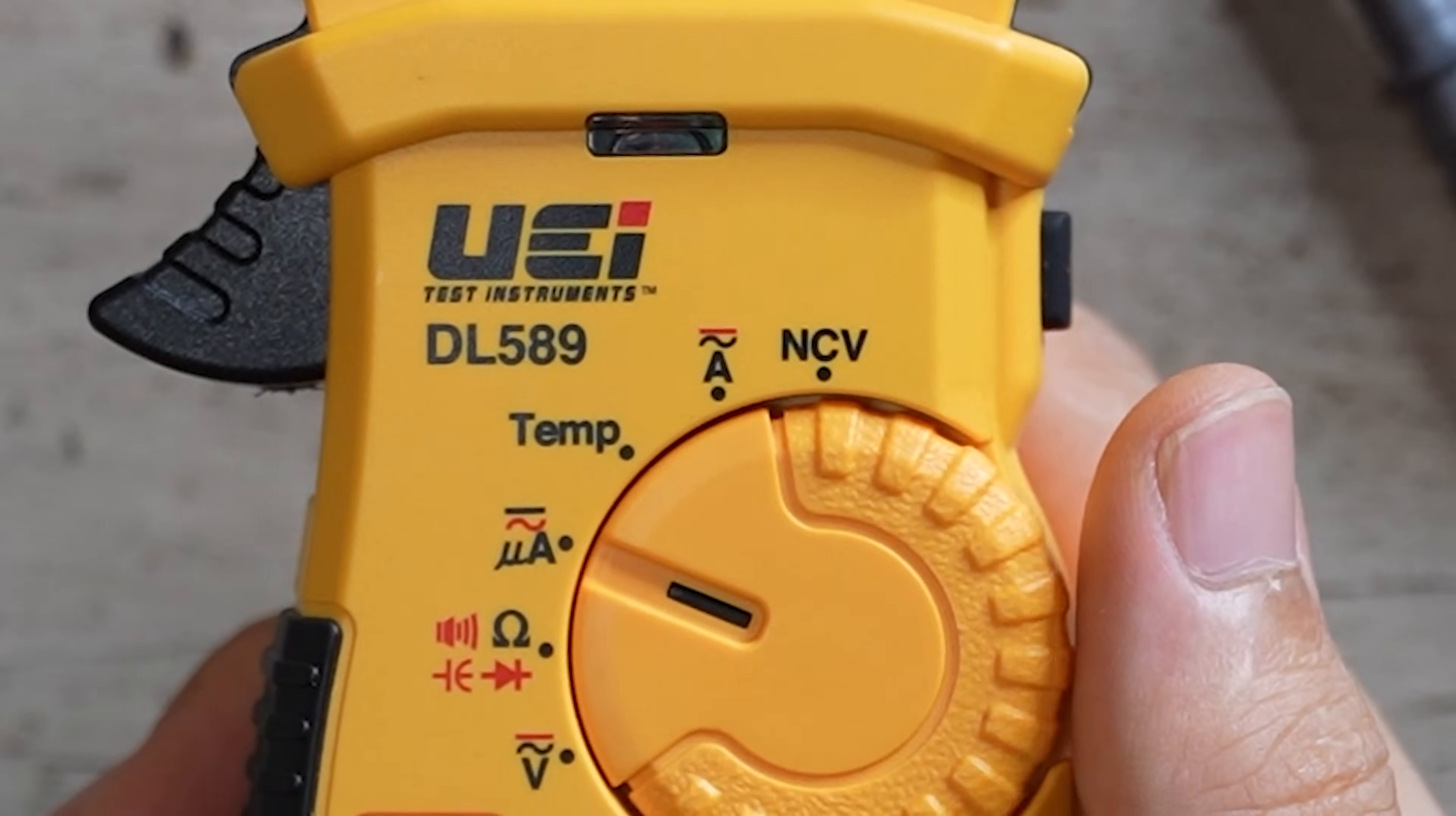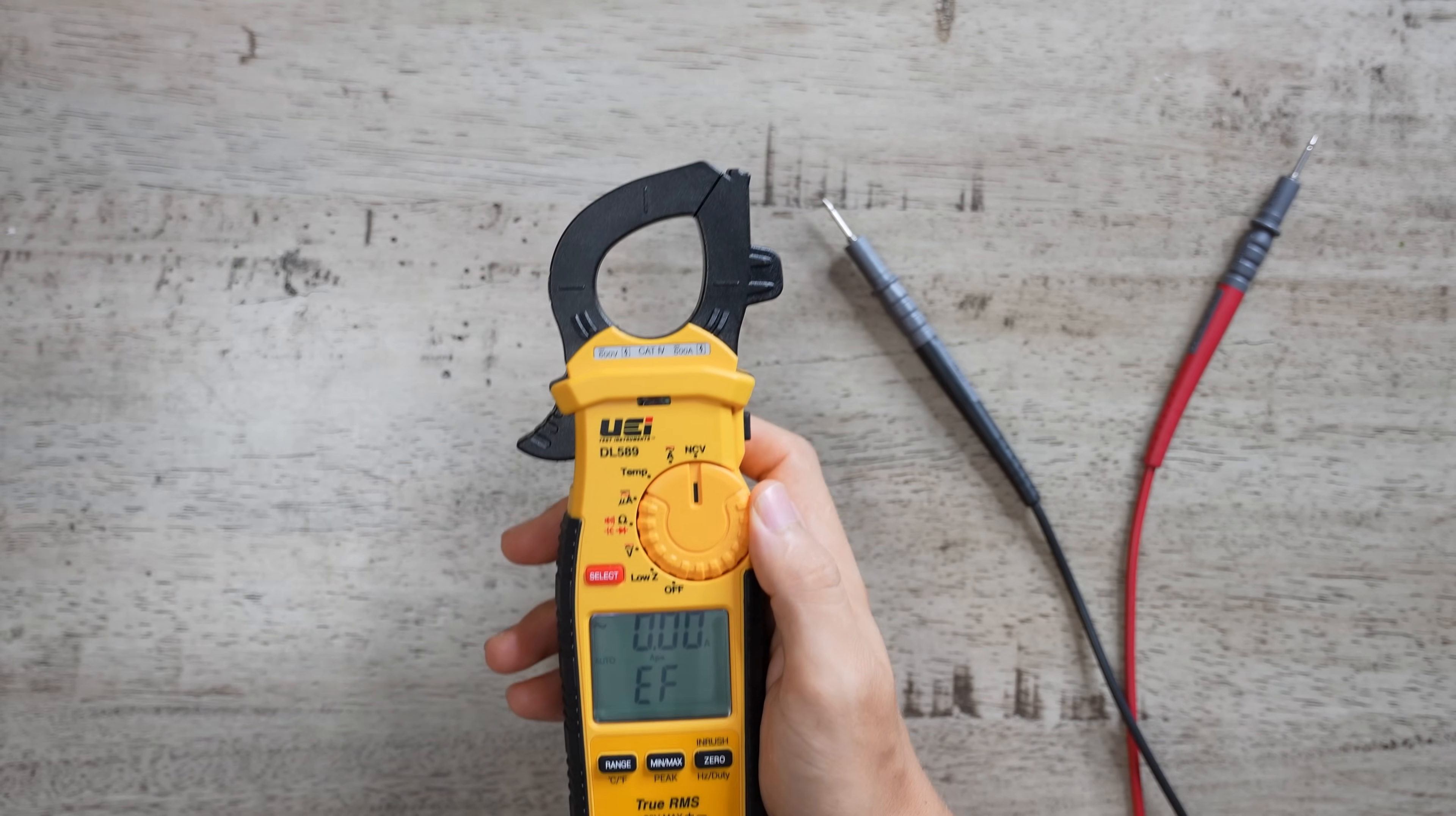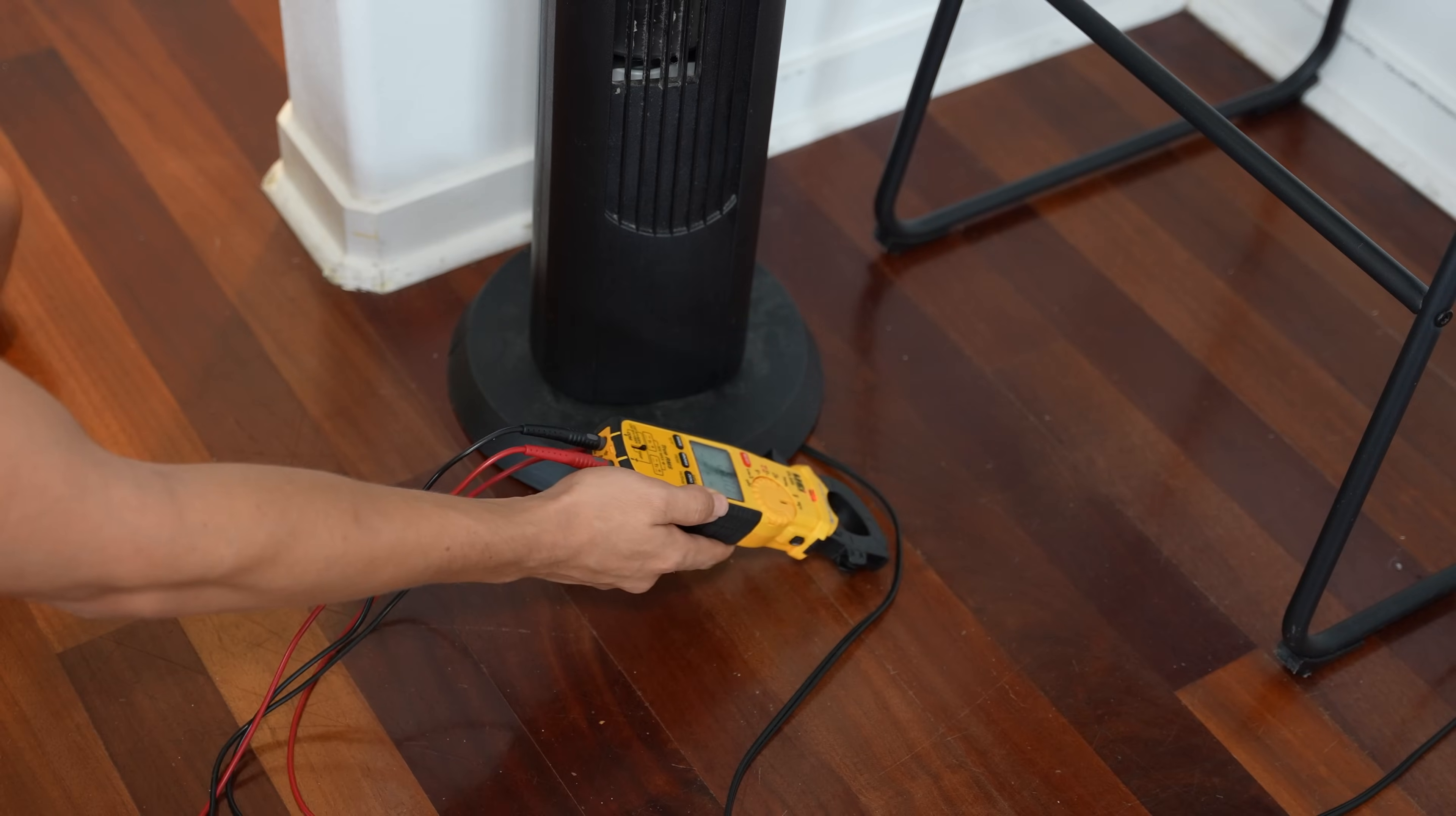Next up, we have non-contact voltage labeled as NCV. With your meter set to non-contact voltage, you could use the tip of the clamp as a voltage pen to detect if there's any power in the area. It's a fast and easy way to check if there's any power at an outlet, a light switch, or if a power cord is energized.